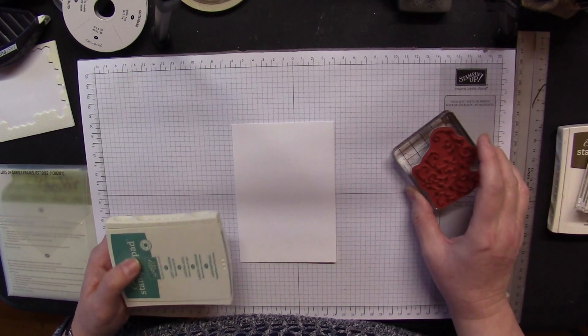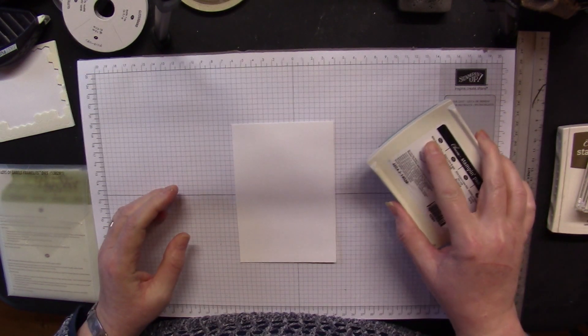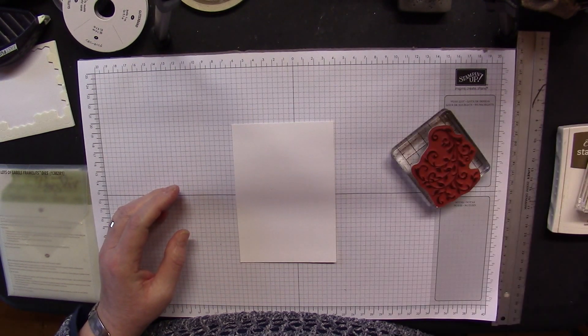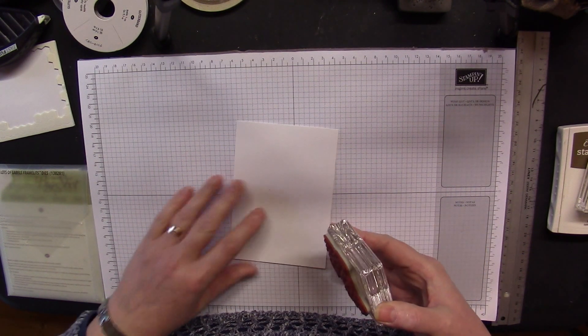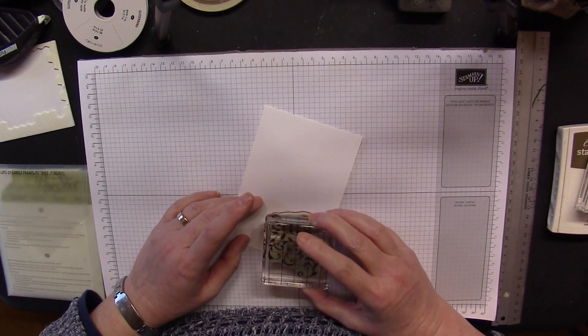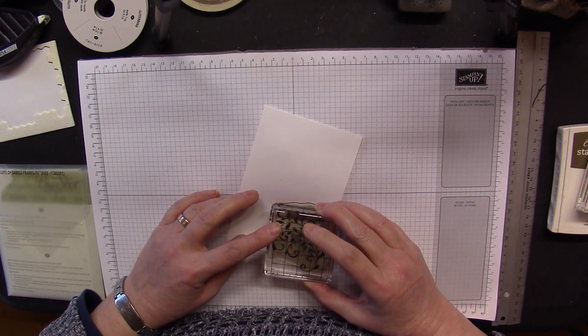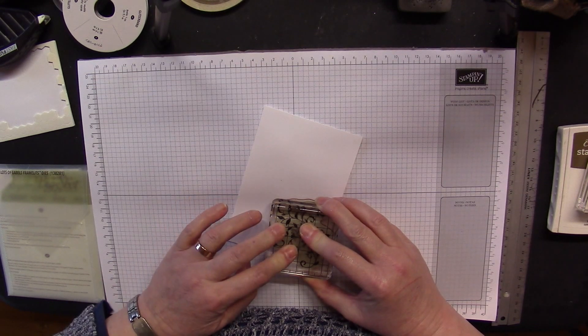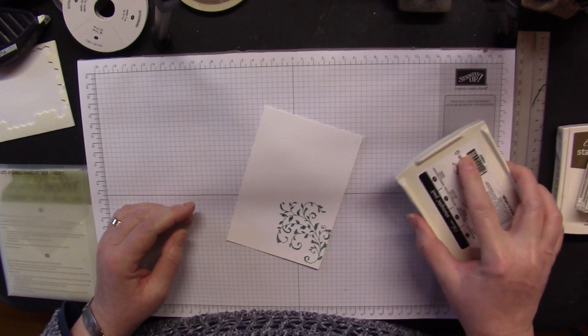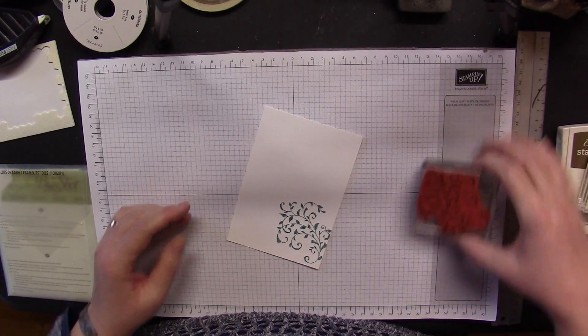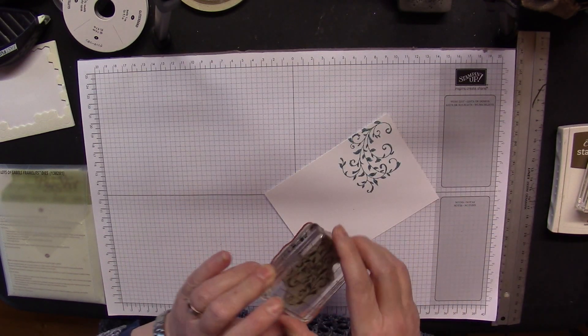I'm starting with the flourish, which really attracted me to ordering this stamp set on my pre-order. That's a luxury you get as a Stampin' Up demonstrator - we get to order and play before the stamp sets and other products go live in a new catalog. I'm using Lost Lagoon ink, which is from the 2015-16 In Colors, and I'm just doing two flourishes in opposite corners.